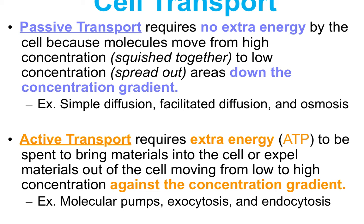In active transport, things move from low concentration to high concentration — against a concentration gradient. These include molecular pumps and endo- and exocytosis. Think about passive transport this way: if I spray stinky perfume in one corner of the room, you're in an area of low concentration and I'm in an area of high concentration. The molecules diffuse out, and eventually you smell the perfume because molecules move from high to low concentration, wanting to spread out. Active transport requires physical energy to move those molecules.